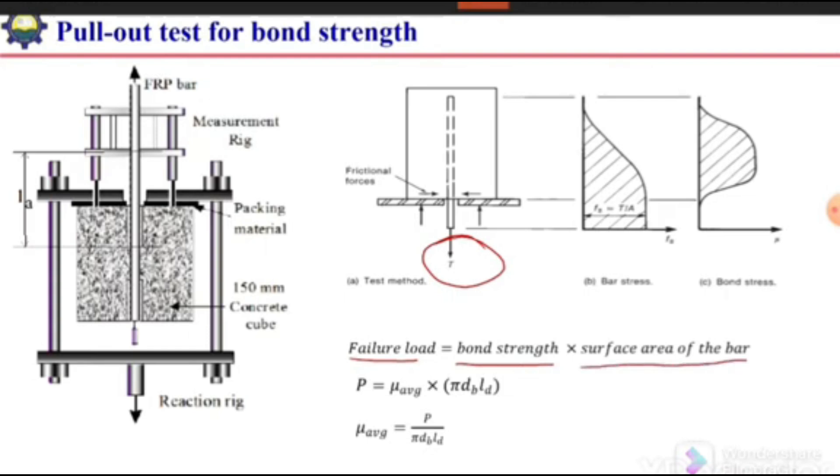So stress multiplied by the area becomes the load. P is equal to μ average bond stress. Actually this is not a uniform value, so we will consider an average value. Average bond strength multiplied by the surface area of this bar, which is π d into l. π d is the perimeter times the length, giving us the surface area of the bar.